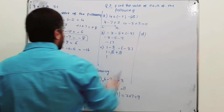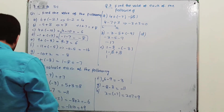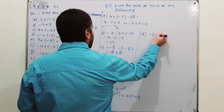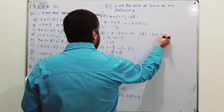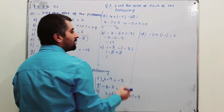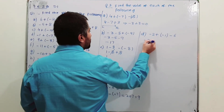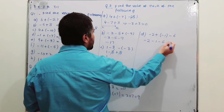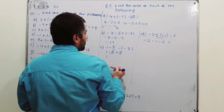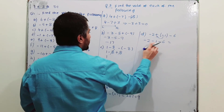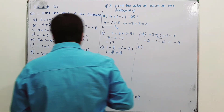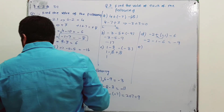Part D: minus 2 plus (minus 2) plus (negative 1 minus 6). Open the brackets — the negative sign inside overcomes the positive outside — giving minus 2 minus 1 minus 6. Minus 2 minus 1 is minus 3, and minus 3 minus 6 is minus 9.